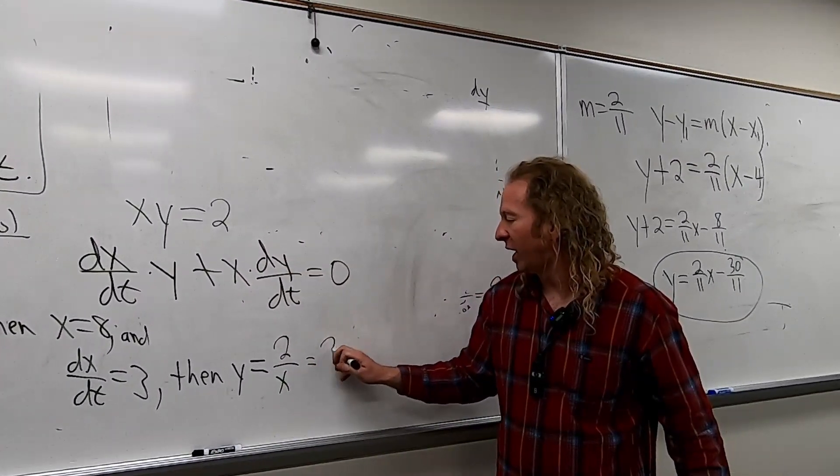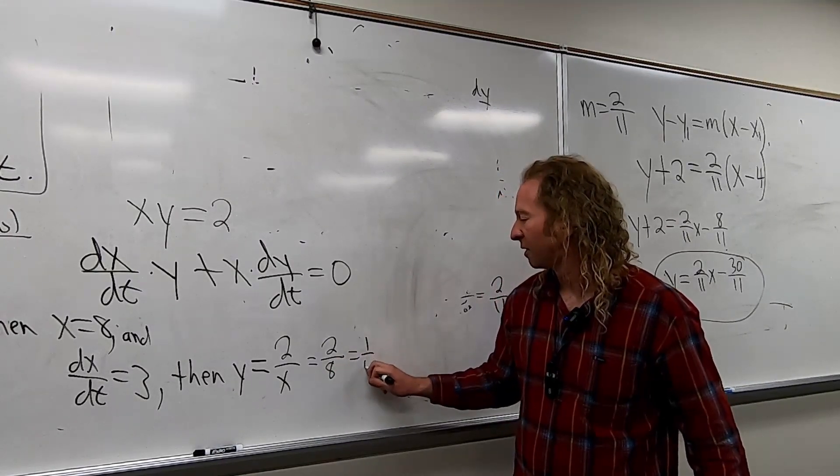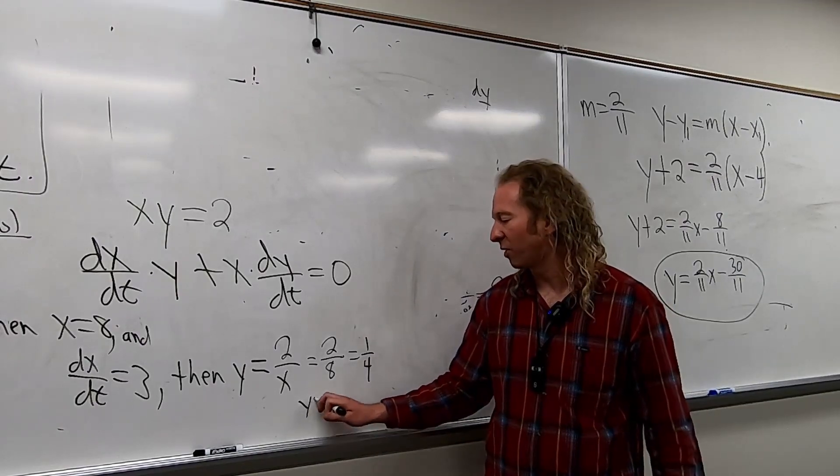2 over 8. 2 over 8. So that would be 1 fourth. Right? So I'm going to write it again. So y equals 1 fourth.